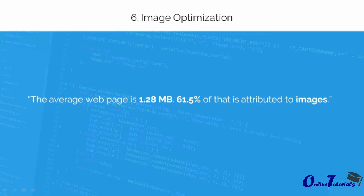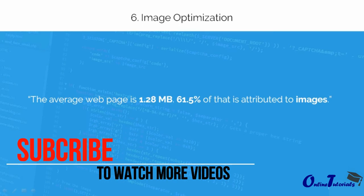Optimizing web images is a very important step. The average web page is 1.28 MB, and 61.5% of that is attributed to images. So it is highly recommended to optimize images for the web. Links to several online tools for image optimization have been added in the resource file — go ahead and check them.